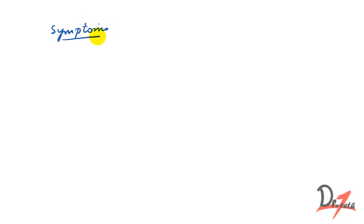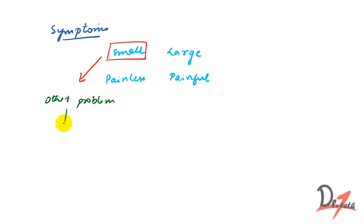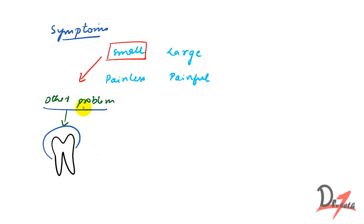Regarding symptoms: the cyst could be small or large, painless or painful. Small dentigerous cysts are usually asymptomatic and are discovered by chance — the patient comes for some other problem, you take a radiograph, and you accidentally find a dentigerous cyst. The patient in this case will have no complaints related to the cyst.